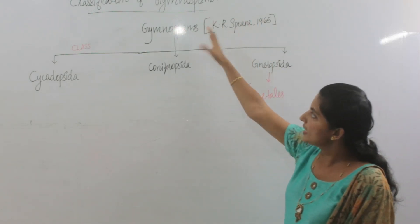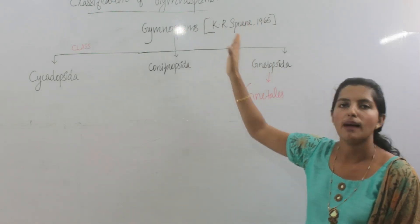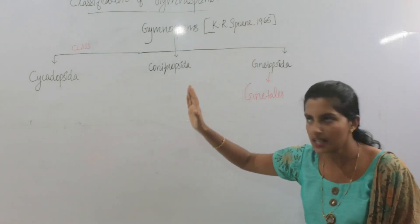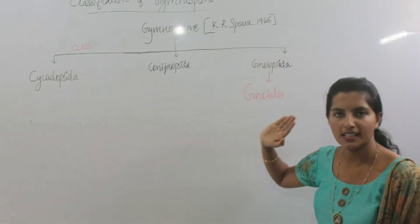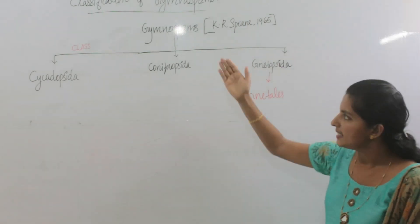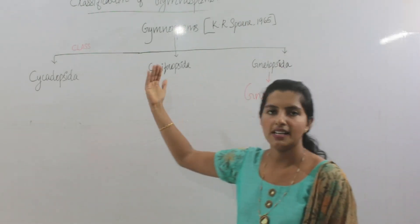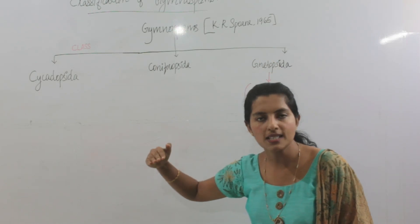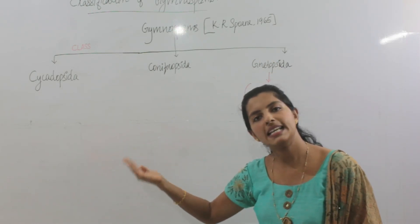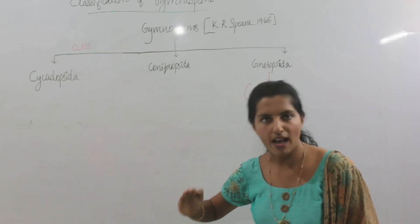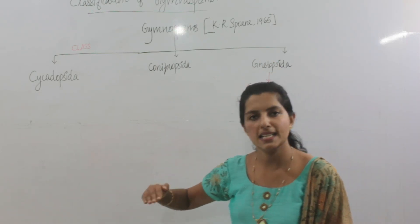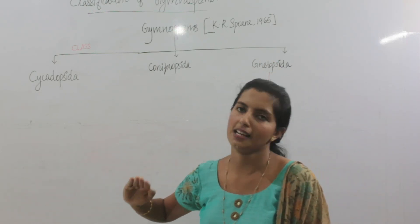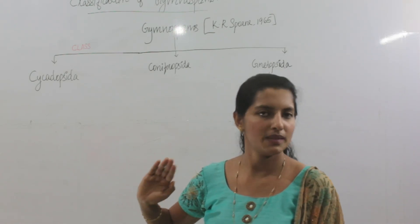This is the classification of gymnosperms given by K.R. Sporne. He considered gymnosperms as a division, classified into three different classes, and the classes are divided into orders, which are divided into families, within which the genera and species are placed.